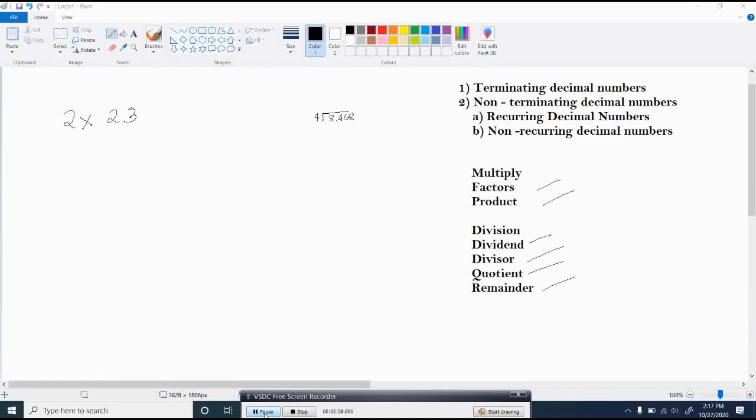Let us proceed into our example. First, I will be applying a partial product. A partial product is a way of distributing the numbers. 2 multiplied by 23. First, find an addend that will be equal to 23.